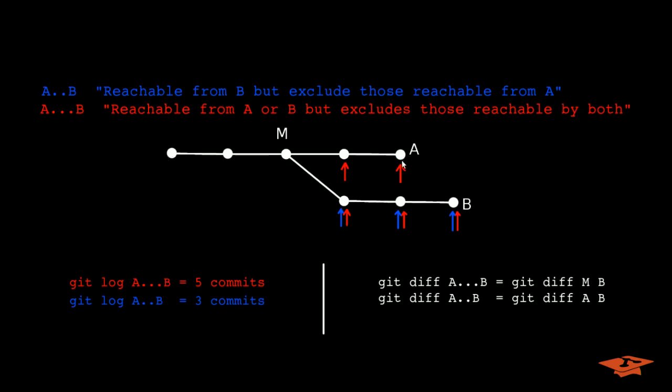The commits reachable from A are pretty much the same thing. So the A commit, the parent, M, and everything back from that. In the definition of A double dot B, what we're saying is the things that are reachable from B but exclude those reachable from A. And that happens to be the blue highlighted commits here.